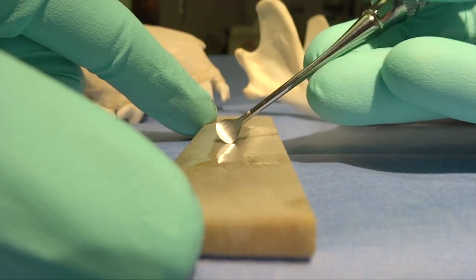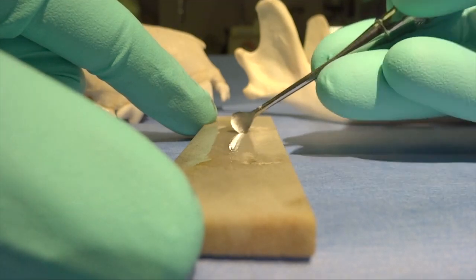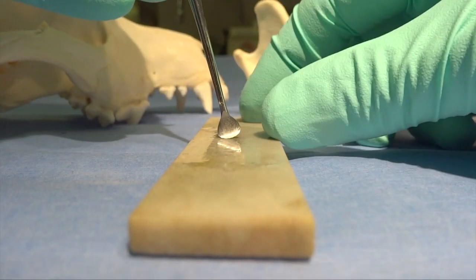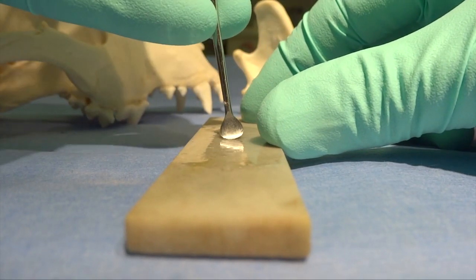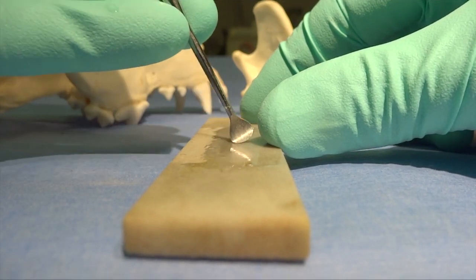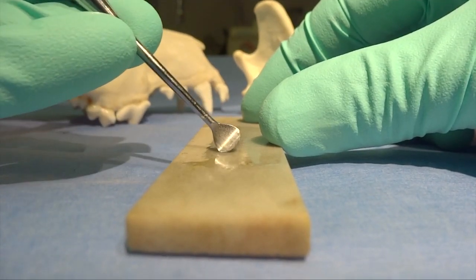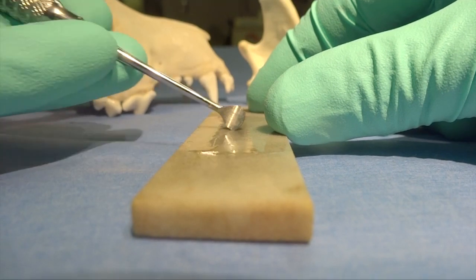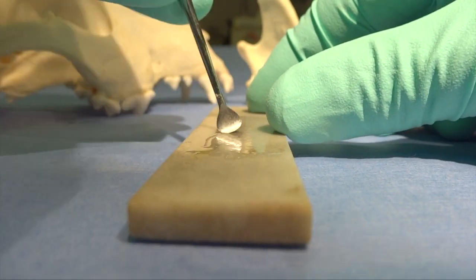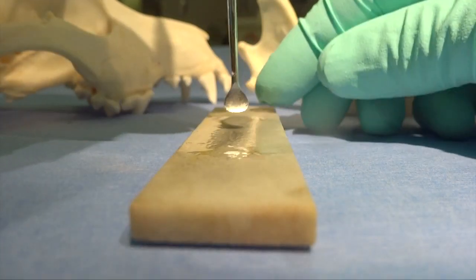For a periosteal elevator and for a luxator, that places that instrument perpendicular to the stone itself. You can see I'm utilizing up to and about halfway on the lateral aspects of that periosteal elevator.